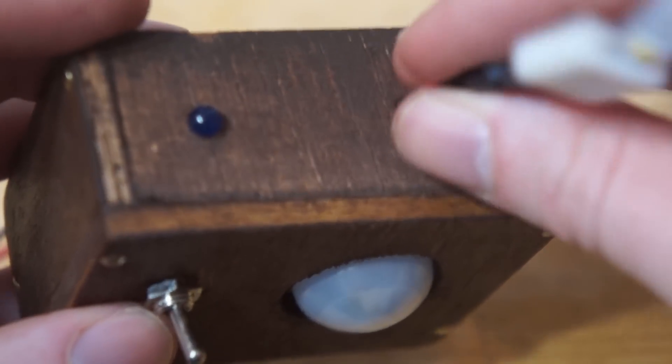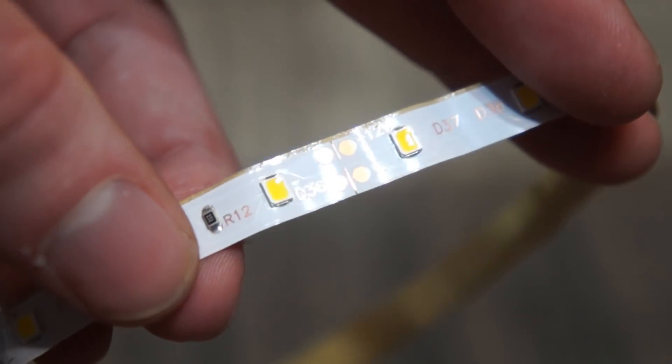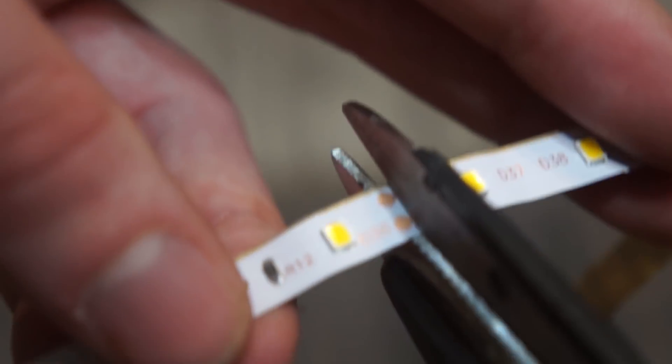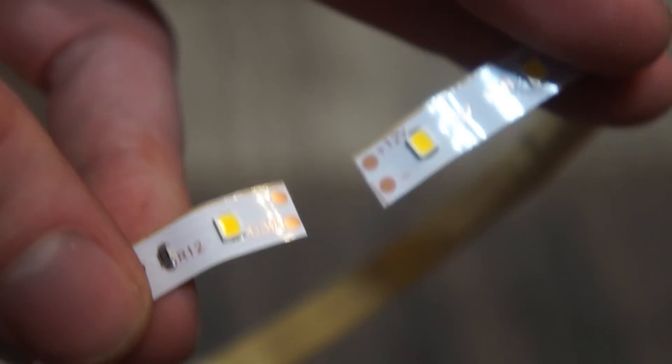And then finally this last hole here is where the LED connector goes. When cutting the LED strip, make sure you cut between the four dots so that it has two dots on each side for positive and negative.